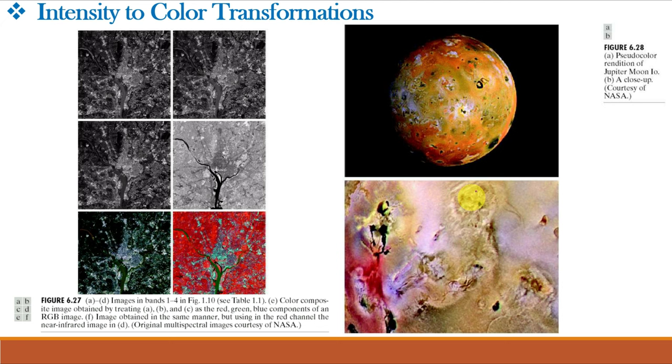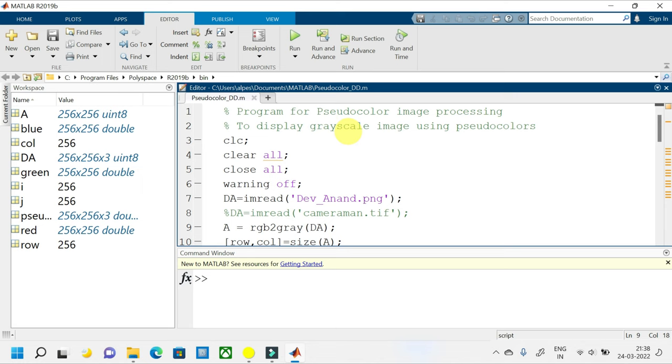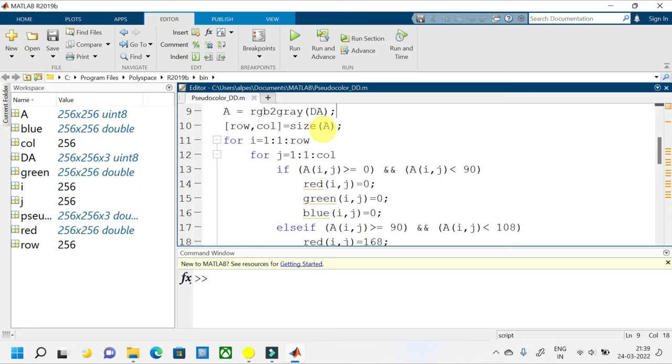Let us implement the pseudocolor multi-level intensity slicing in MATLAB. This program does the multi-level intensity slicing of a grayscale image and assigns different colors to it. Here, we are reading an image devanan.png and storing it in DA. You can even use the cameraman image by doing slight modifications in the program. As my image is a color image, I will be first converting it to grayscale image by using RGB to gray. Next, I am finding the size of the grayscale image and storing the number of rows and columns. Here, the size is 256 by 256.